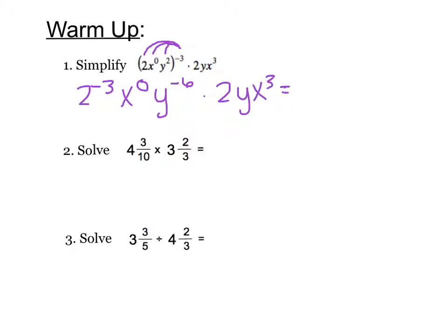Now we can combine like terms. Remember these are the first, and now we add our exponents. So we have 2 to the negative 2, x to the 3, and y to the negative 5.